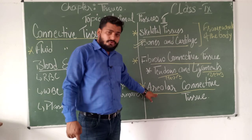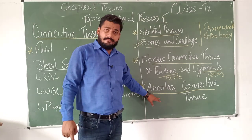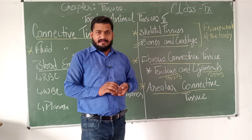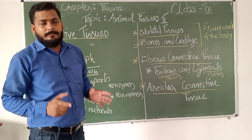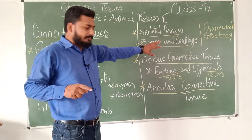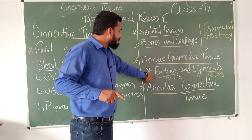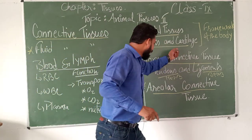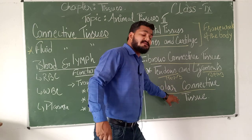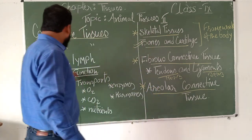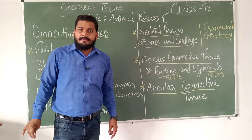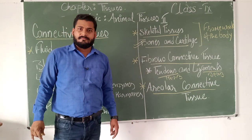Areolar connective tissue, along with binding the muscle and the skin, also binds nerve cells together. By this way we have a complete body structure connected one to one: bones form the framework, tendons connect muscle to bone, ligaments connect bone to bone, areolar tissue connects skin to muscle and also binds nervous tissue. Blood and lymph together carry out the function of transporting different material from one place to another.